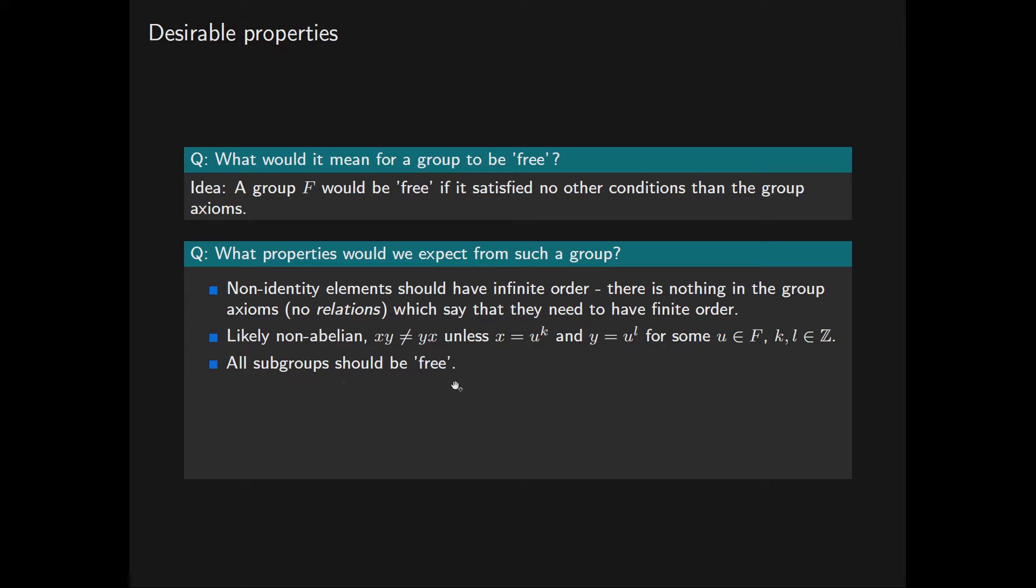We would expect that all subgroups of free groups would be free. This is because supposing we have a subgroup of this group F and it were not free, that would mean it would satisfy extra axioms or extra conditions other than the group axioms. And because this subgroup is a subgroup of F, that would mean that this group F would satisfy some other conditions than the group axioms.